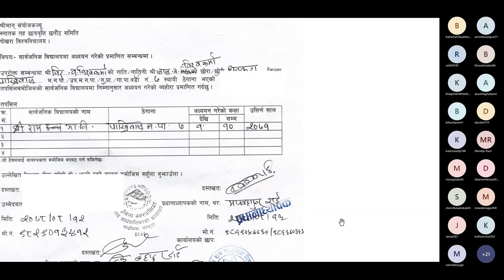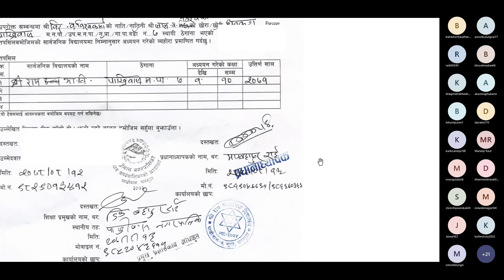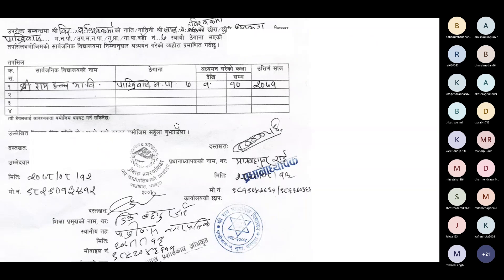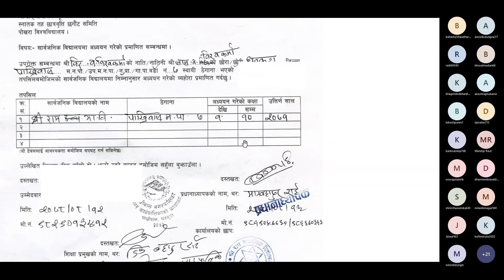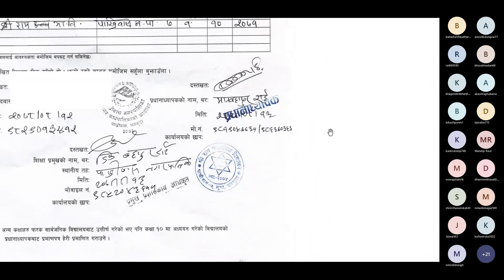The SLC or SE certificate from the school needs to have the principal's signature. This means that if we have studied in grade 6 or 7, we need to have the signature. So the SLC or SE document requires the school principal's signature.